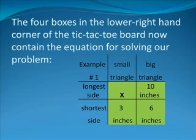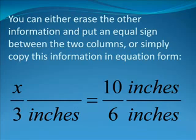You can either erase the other information and put an equal sign between the two columns, or simply copy this information in equation form. Note the lower four squares in the box on the right-hand side. Your equation form reads like this: X over 3 inches is equal to 10 inches divided by 6 inches for this particular problem.